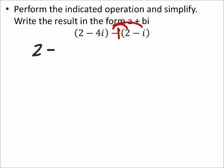So this becomes 2 minus 4i, and then I would have minus 2 and then plus i. We can put a 1 in front of the i if it helps us.